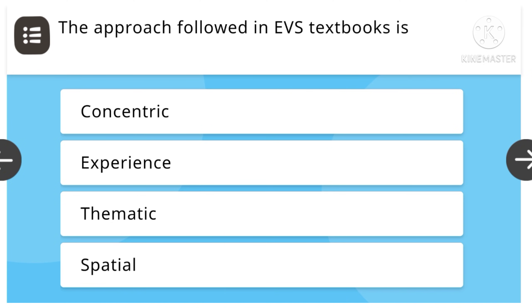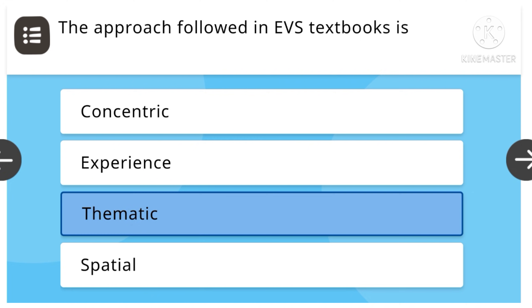The approach followed in the EVS textbook is: concentrated, experience, thematic, or spatial. Thematic is the right answer.